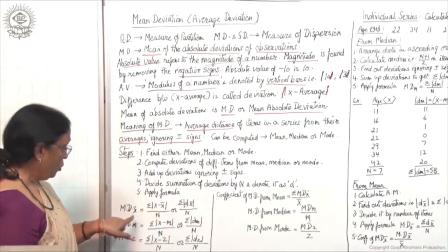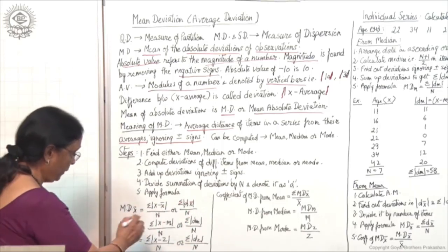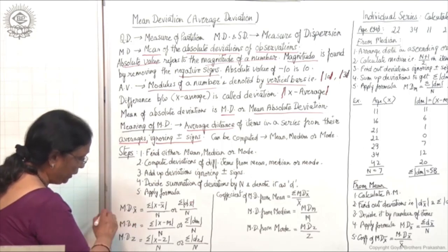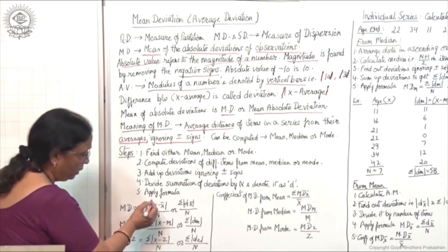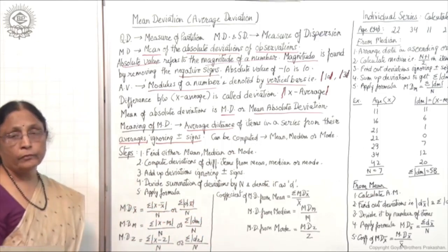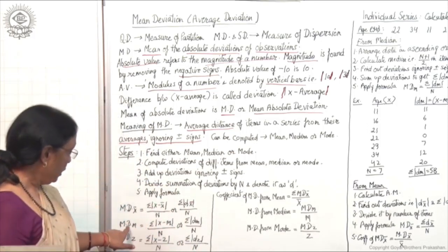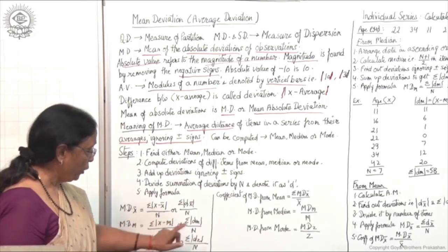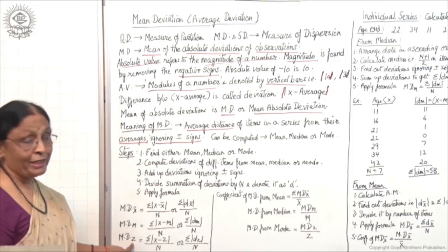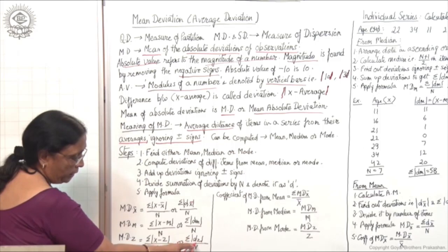Apply the formula: MD(x̄) = σ|x − x̄| / n, or σ|dx| / n. MD(M) = σ|x − M| / n, or σ|dm| / n — mean deviation from median. MD(Z) = σ|x − Z| / n, or σ|dz| / n — mean deviation from mode, where Z denotes mode.